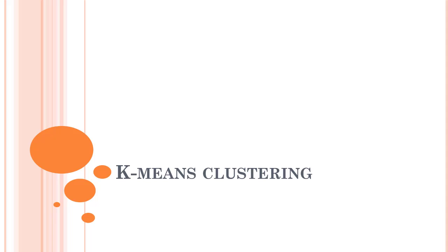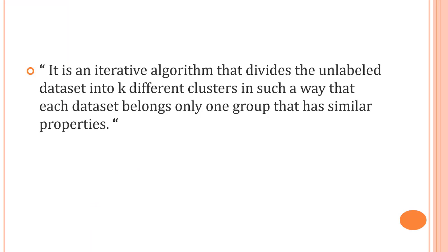Hi everyone, welcome back. Now we are going to start with k-means clustering. As I've told you in our last video, it is a centroid-based clustering technique where we have to tell how many number of clusters we need, that is k. K-means clustering is quite a simple unsupervised learning algorithm capable of handling dense and sparse datasets very quickly and efficiently, often in a very small number of iterations. It's an iterative algorithm which divides your data into k clusters, allowing us to discover categories of groups in an unlabeled dataset without the need for any training.